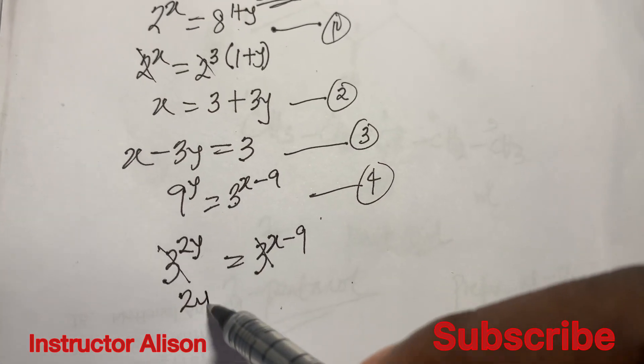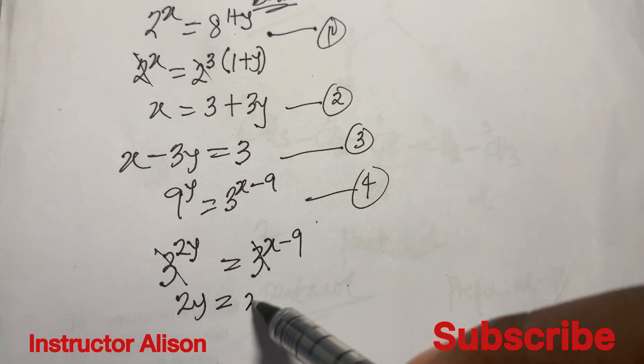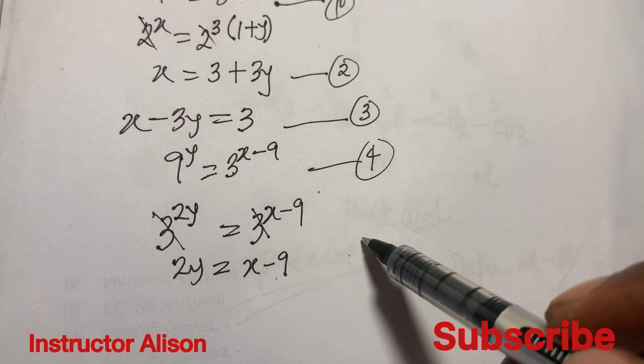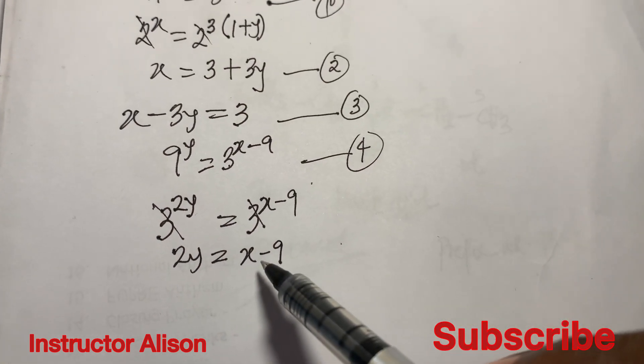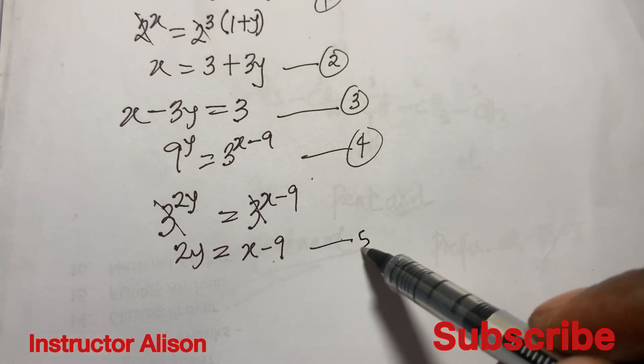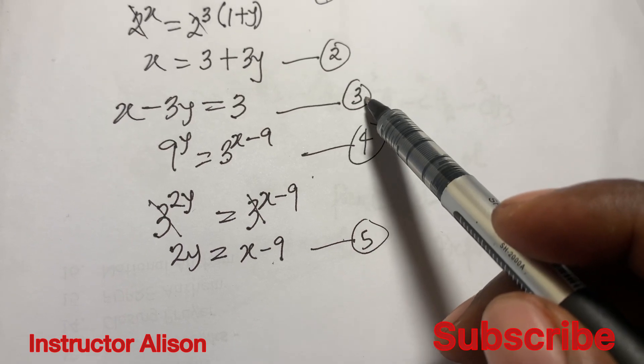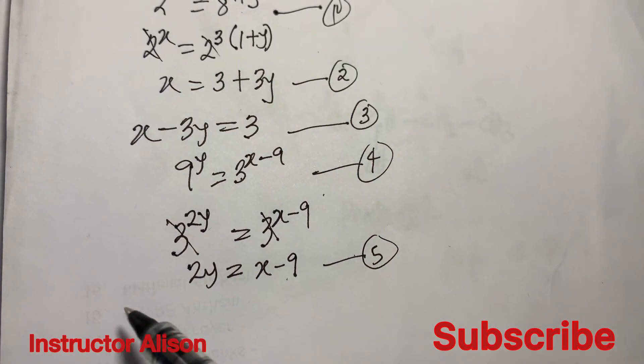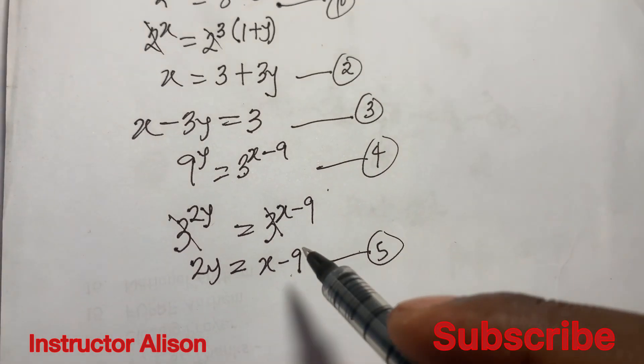To do that we have 3^2 that will give you 9. If the 2 multiplies by y we have 2y, and we have here 3^(x-9). Of course you notice that the bases are the same, you have to cancel them and then equate the powers.